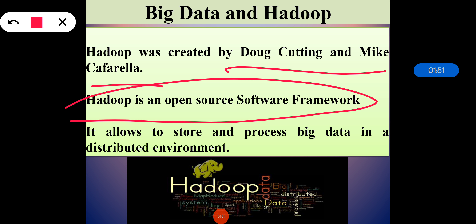It is an open source framework written in Java for distributed storage and distributed processing of very large data sets on computed clusters. Hadoop allows storing and processing big data in a distributed environment across clusters of computers using simple programming models. It is designed to scale up from single servers to thousands of machines, each offering local computation and storage. All the modules in Hadoop are designed with the fundamental assumption that hardware failures are very common and should be automatically handled by the framework.